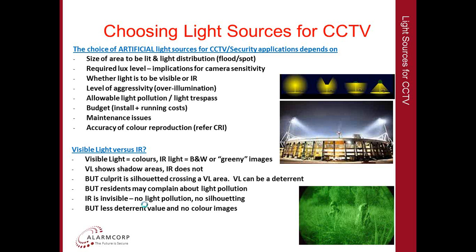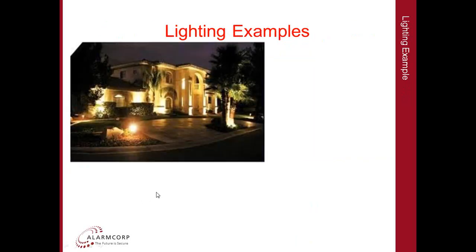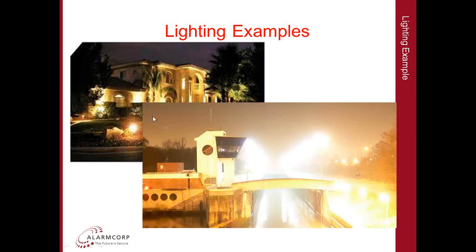Some examples of light: a typical VIP residence lit reasonably tastefully, where visible light means anybody crossing in front would be silhouetted. And an example of gross over-illumination and light pollution, where there is just so much light that the image is almost unusable.